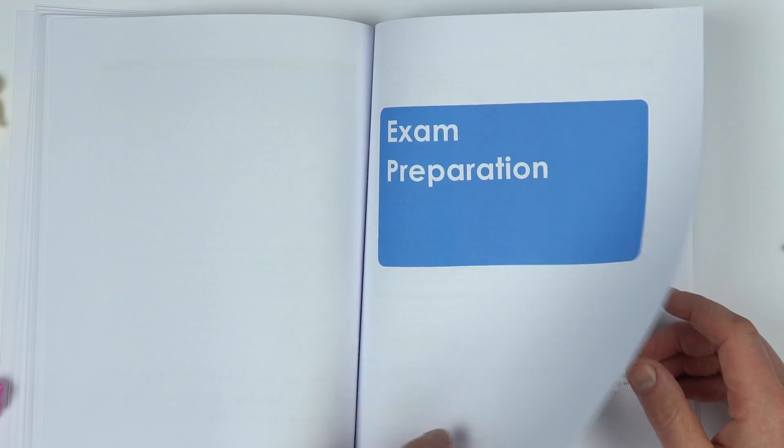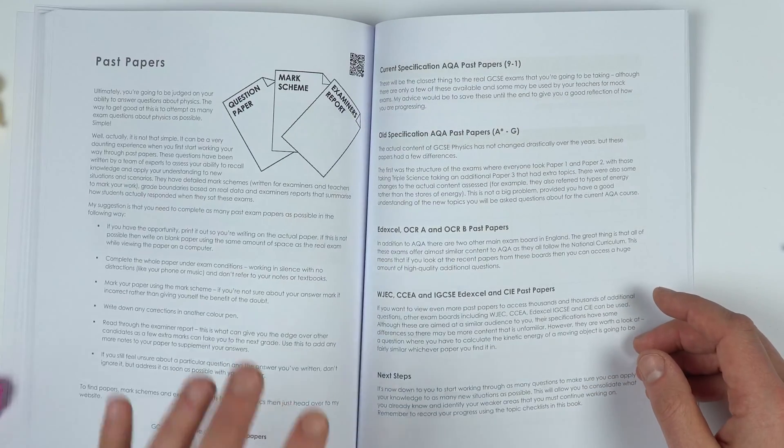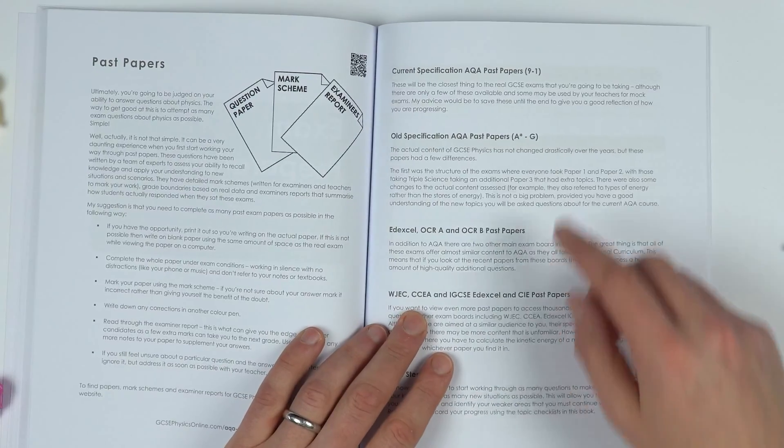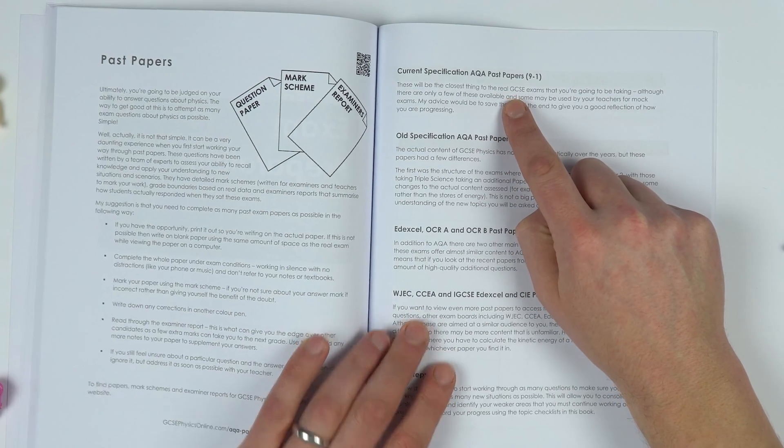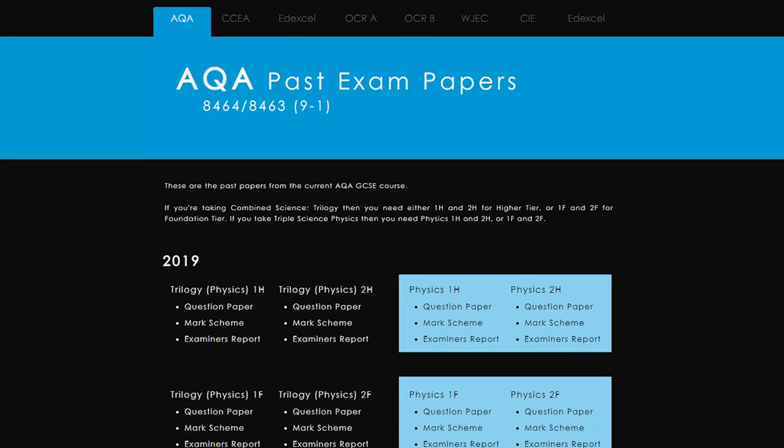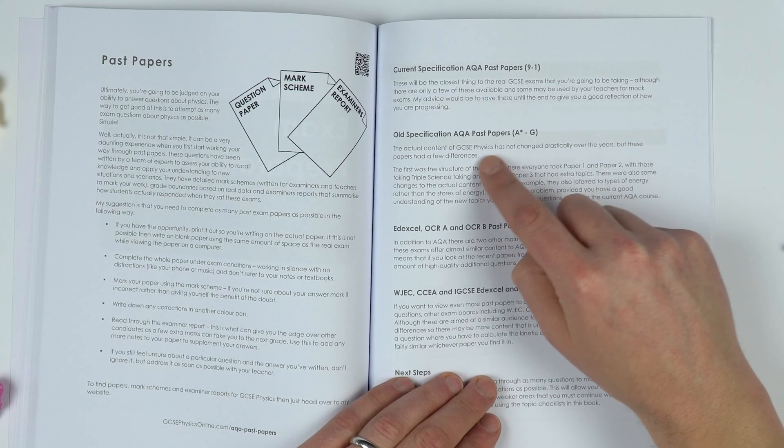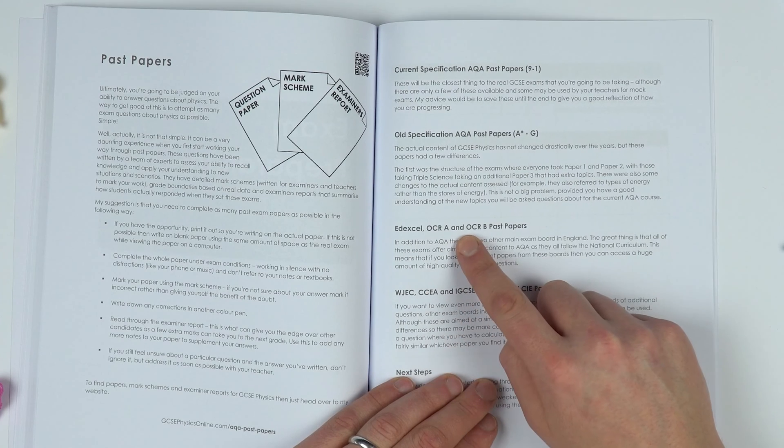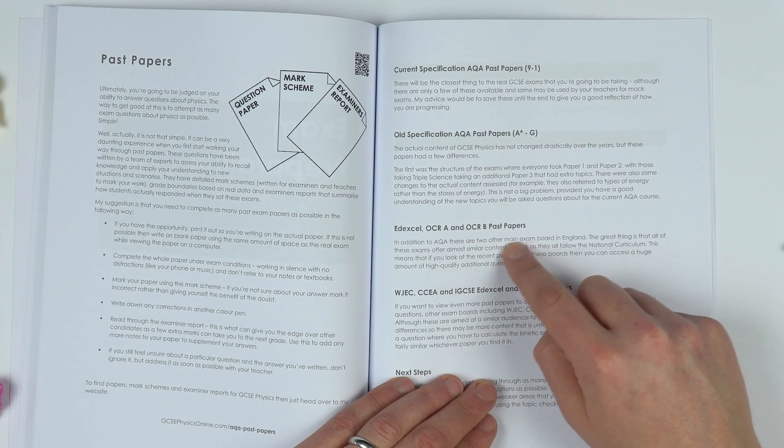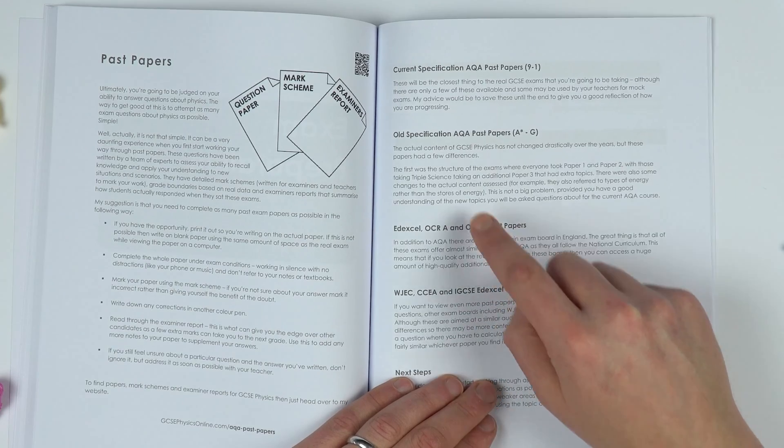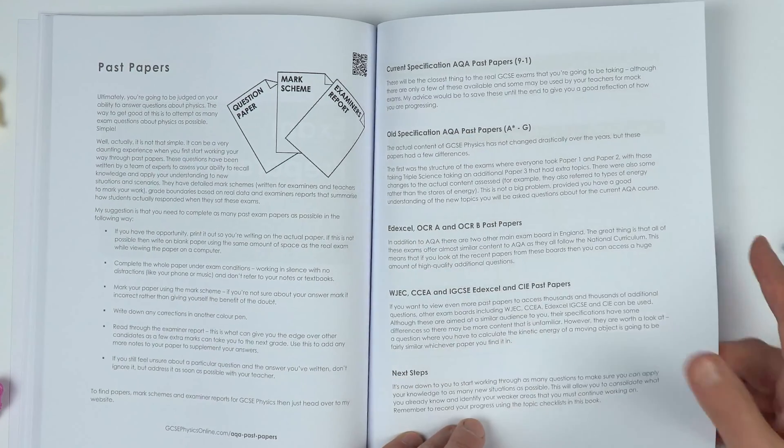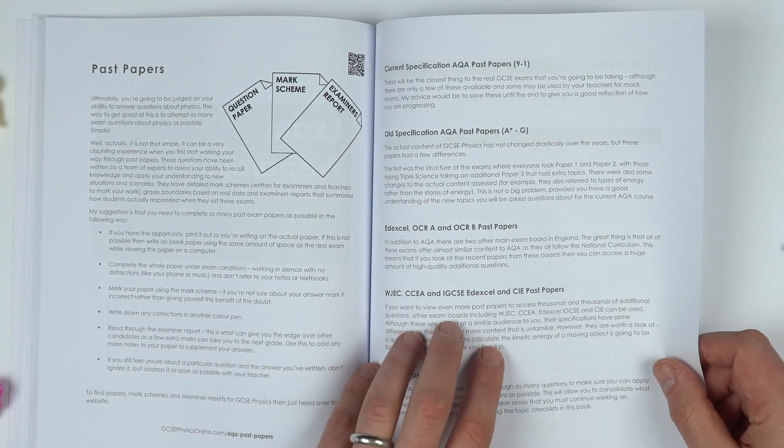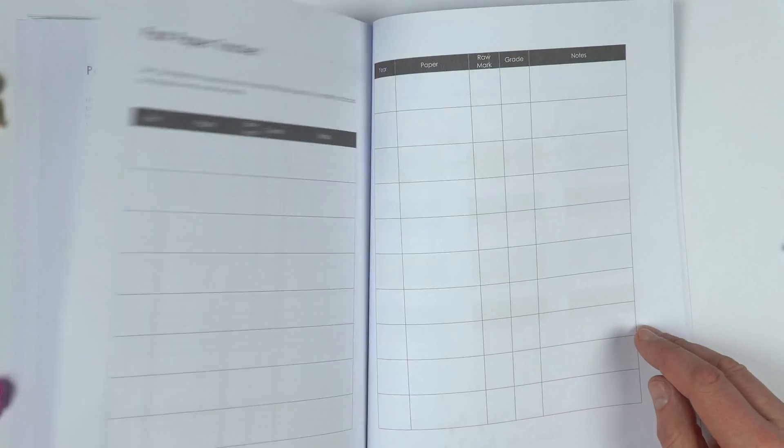The final section is how to prepare for your exams, including using past papers. You can use the AQA past papers, and everything you can find at AQA past papers on the GCSE physics website. There's also links to all of the older specification AQA past papers, as well as links to Edexcel, OCR, and OCRB past papers which often have very similar content to AQA.